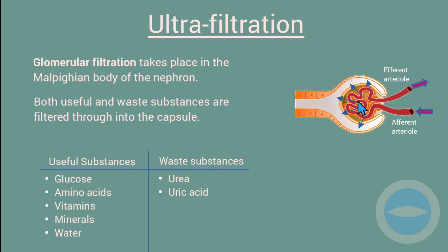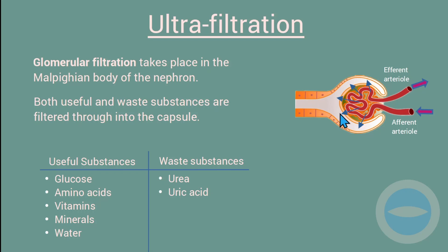As these substances pass into the Bowman's capsule, we call them the filtrate, or glomerular filtrate. You may be asked for this biological term, so remember: substances that pass through here are called filtrate. Other substances that are too large cannot pass through — the most common being blood cells, which cannot pass through, and proteins, which are also large. Blood cells and proteins will remain in the glomerulus and leave via the efferent arteriole.